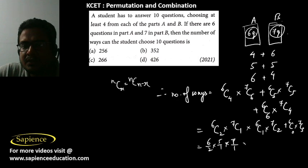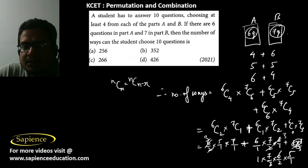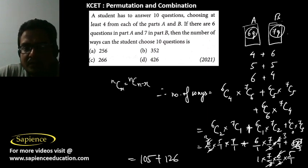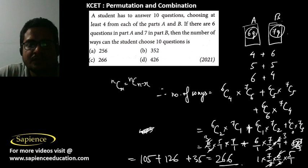Calculating: 6C2 × 7C1 = 15 × 7 = 105; plus 6C1 × 7C2 = 6 × 21 = 126; plus 6C0 × 7C3 = 1 × 35 = 35. Total = 105 + 126 + 35 = 266 ways. Option C is the correct answer.